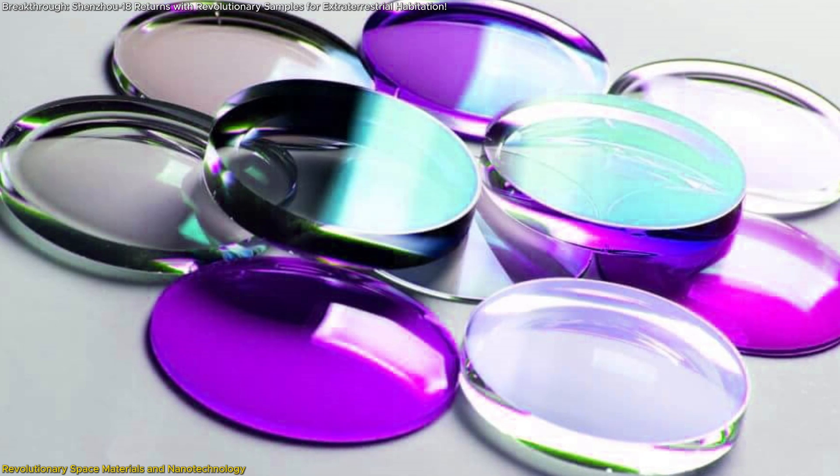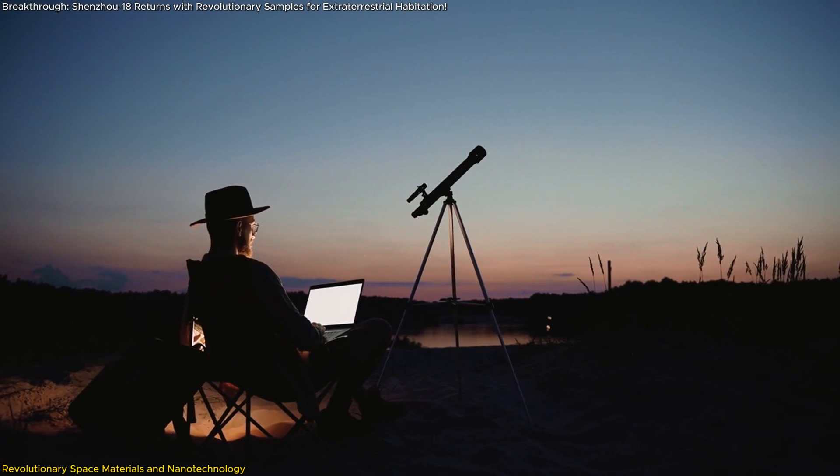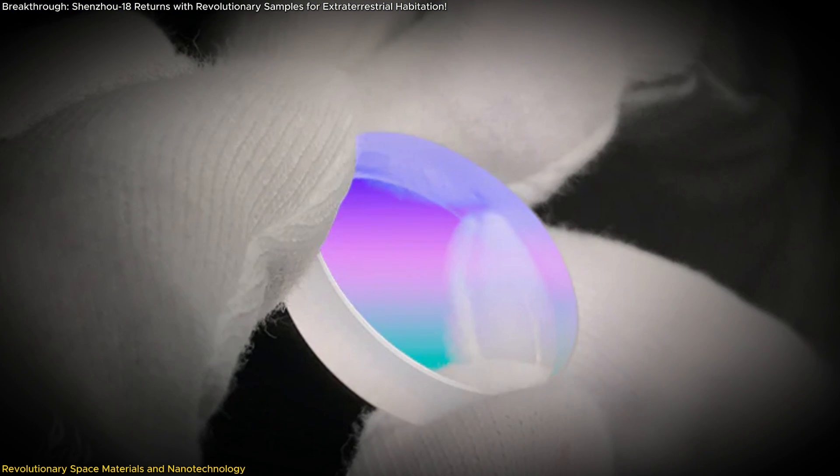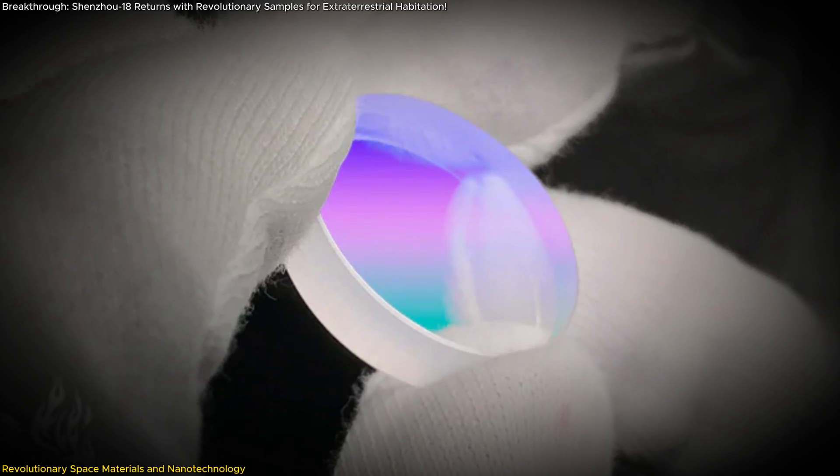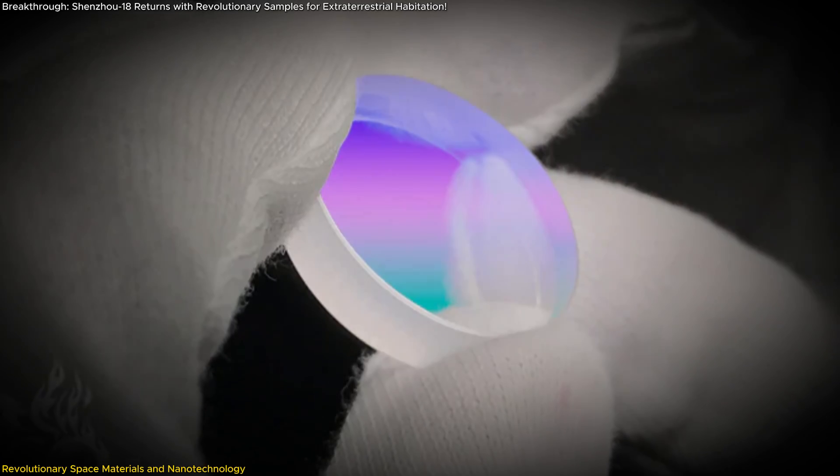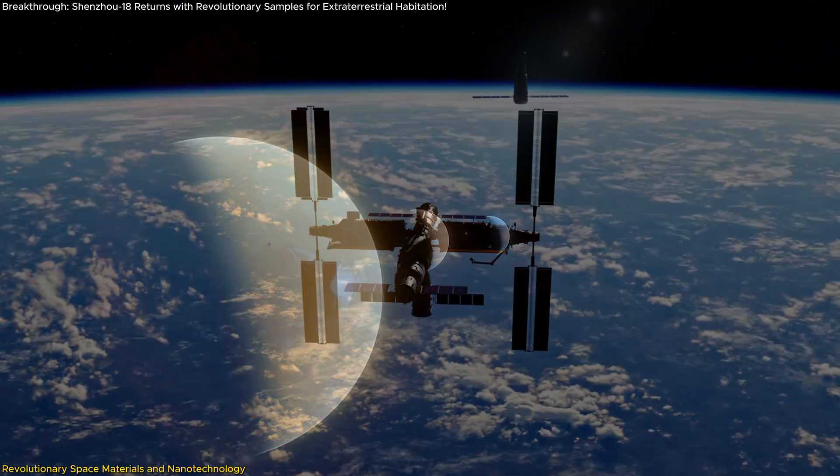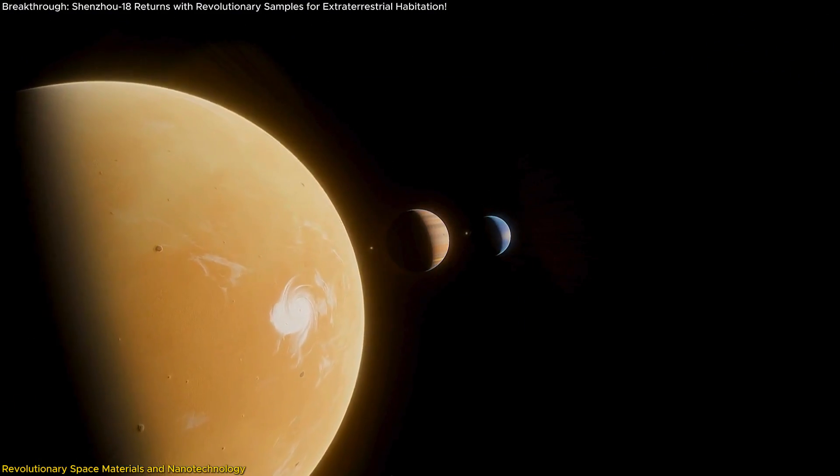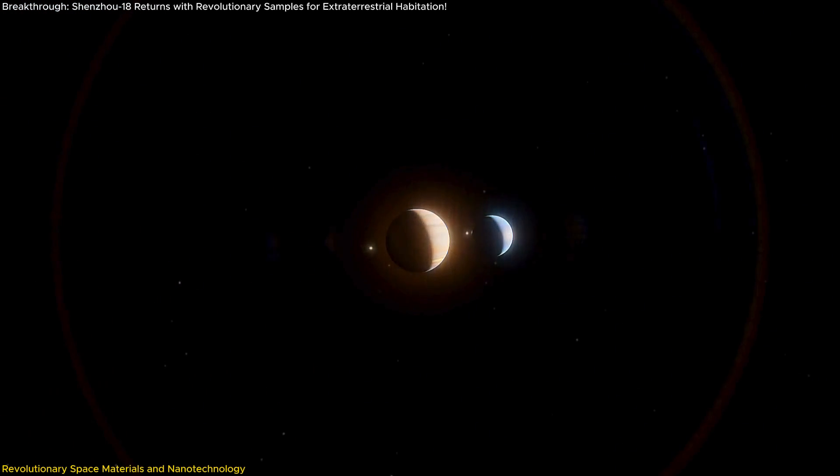Optical coatings developed in space also hold exceptional promise. These coatings are used in devices such as telescopes, lasers, and high-precision optics. When created in microgravity, they can achieve levels of purity and stability that are difficult to replicate on Earth. This enhancement could provide future space missions with better quality optical equipment, enabling scientists to capture clearer images of distant celestial bodies and study them with unprecedented accuracy.